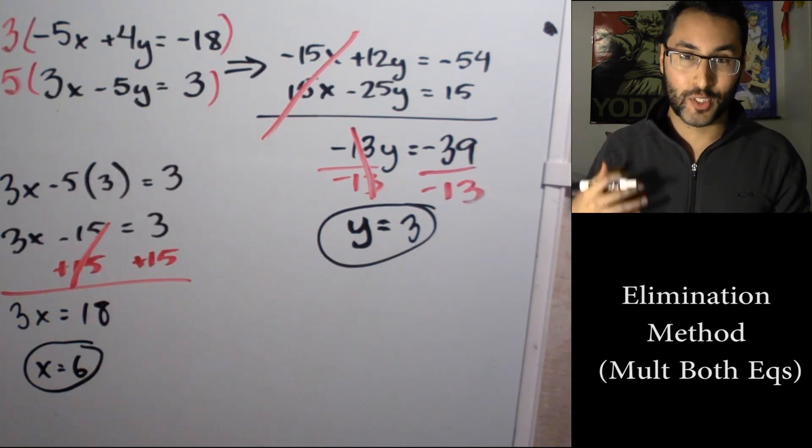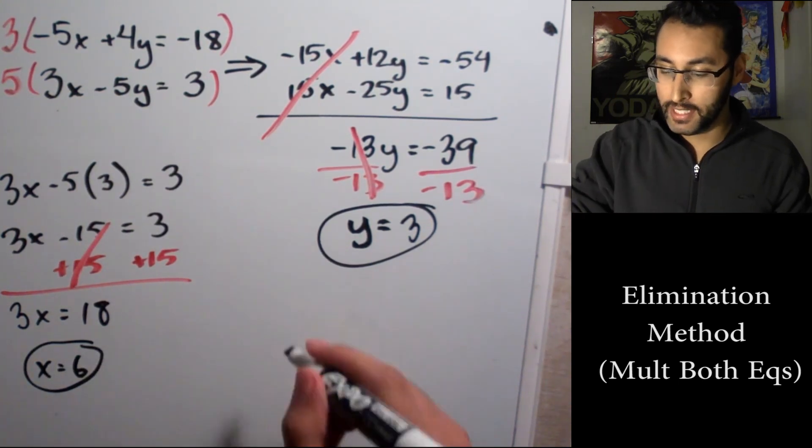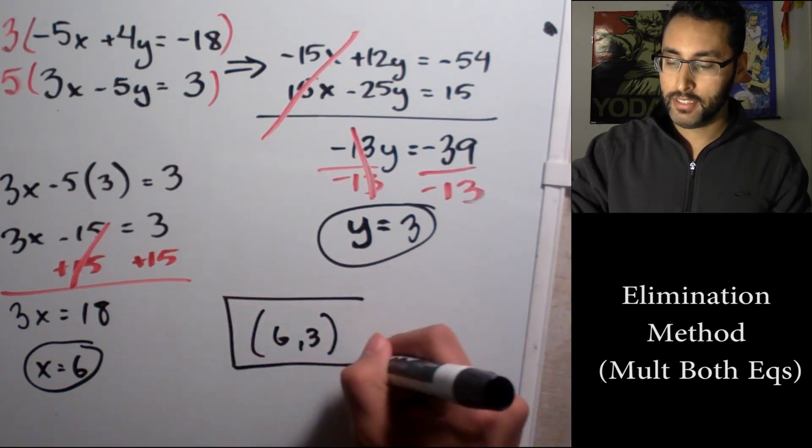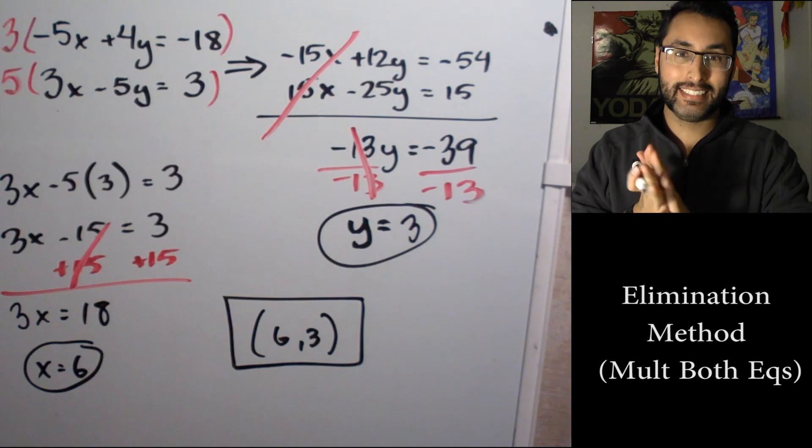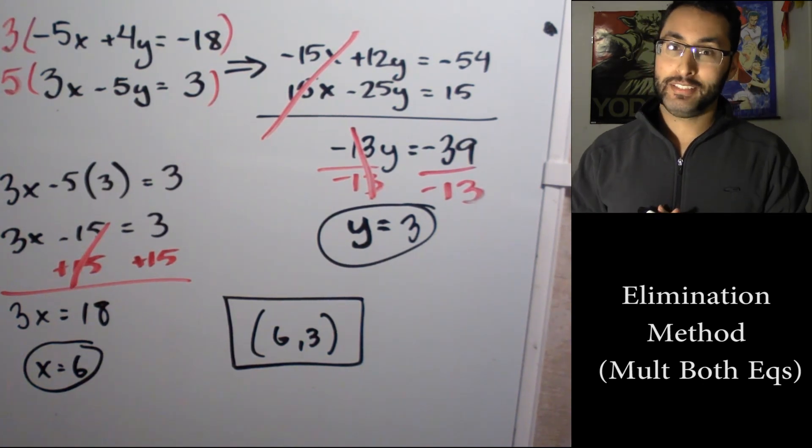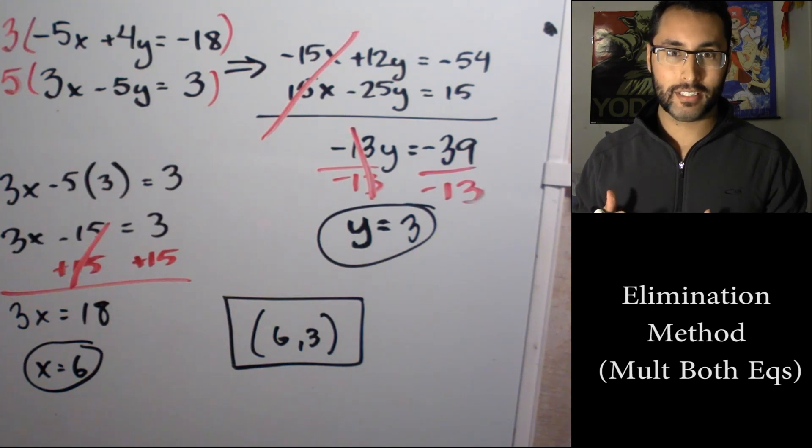And finally, our answer: there is a solution, turns out there's one solution and that solution is (6, 3). And that's the solution to this problem using the elimination method by multiplying two equations. I'm exhausted, I hope you got a lot out of this video.